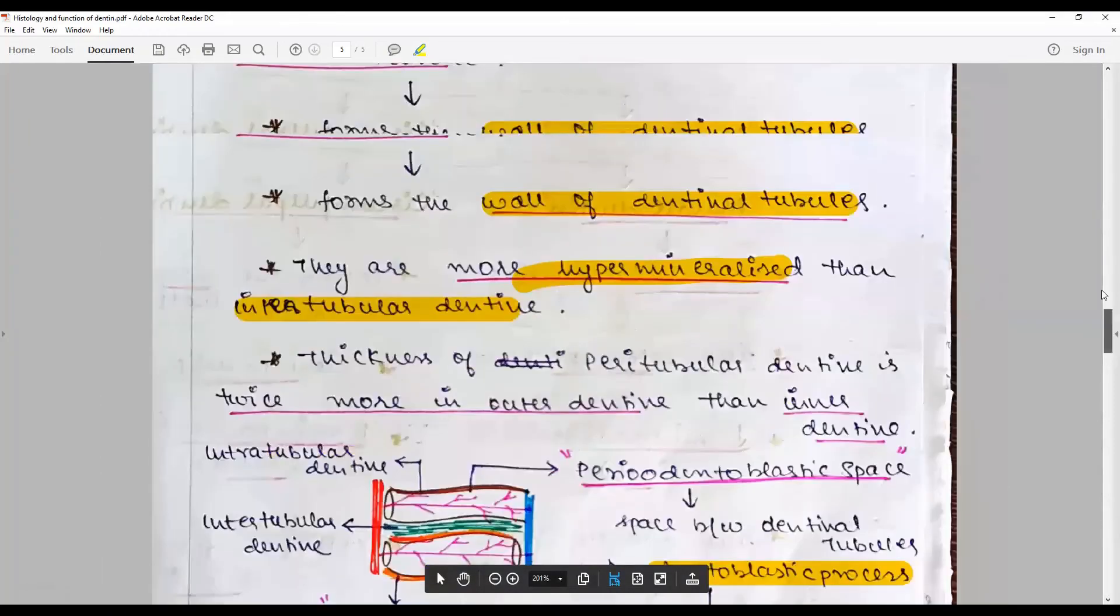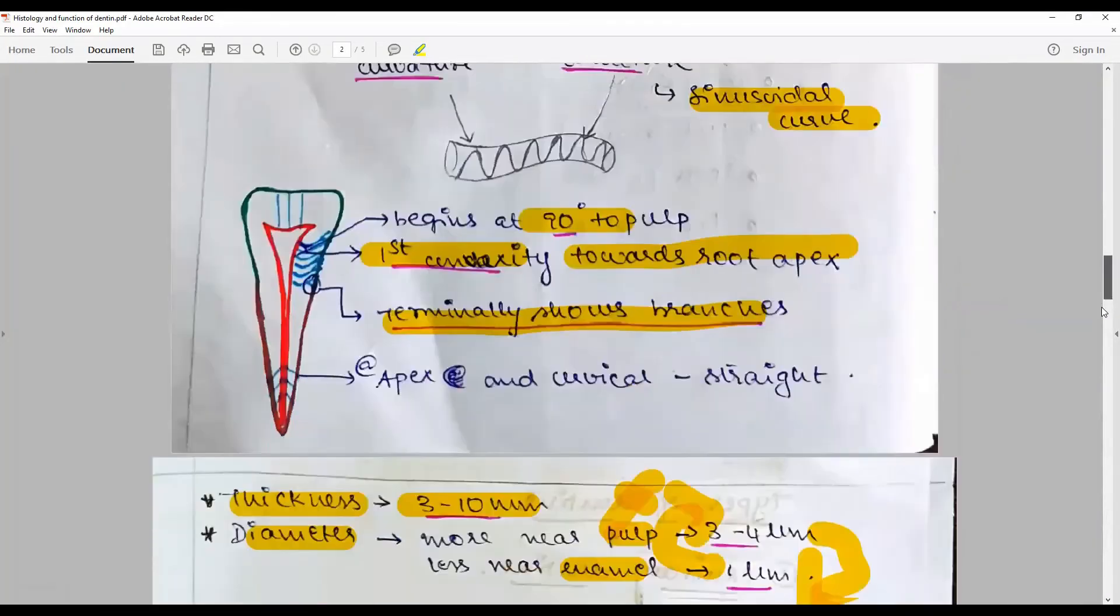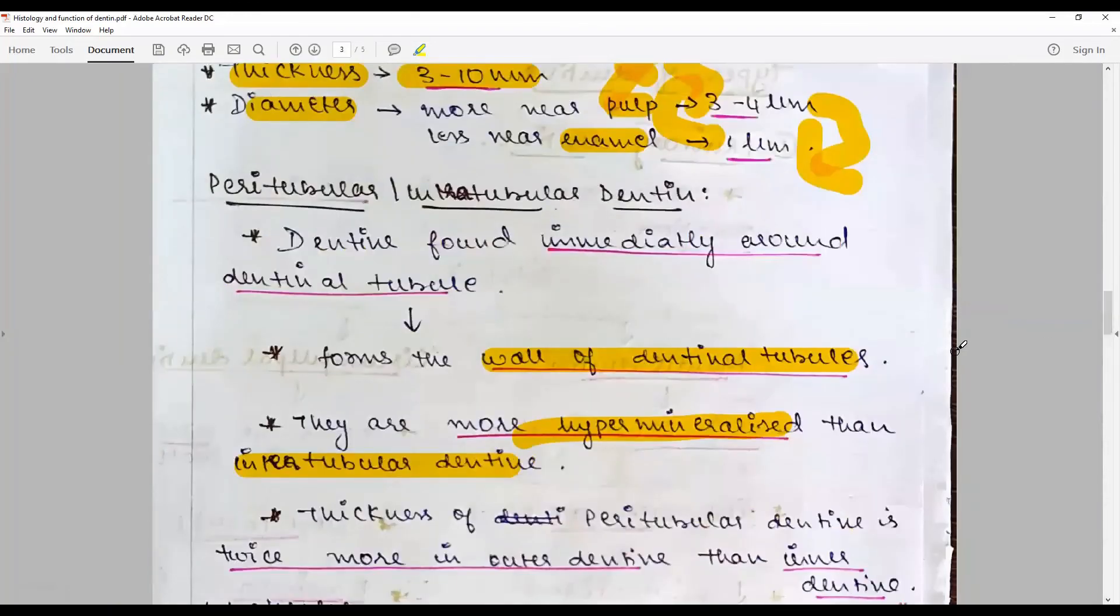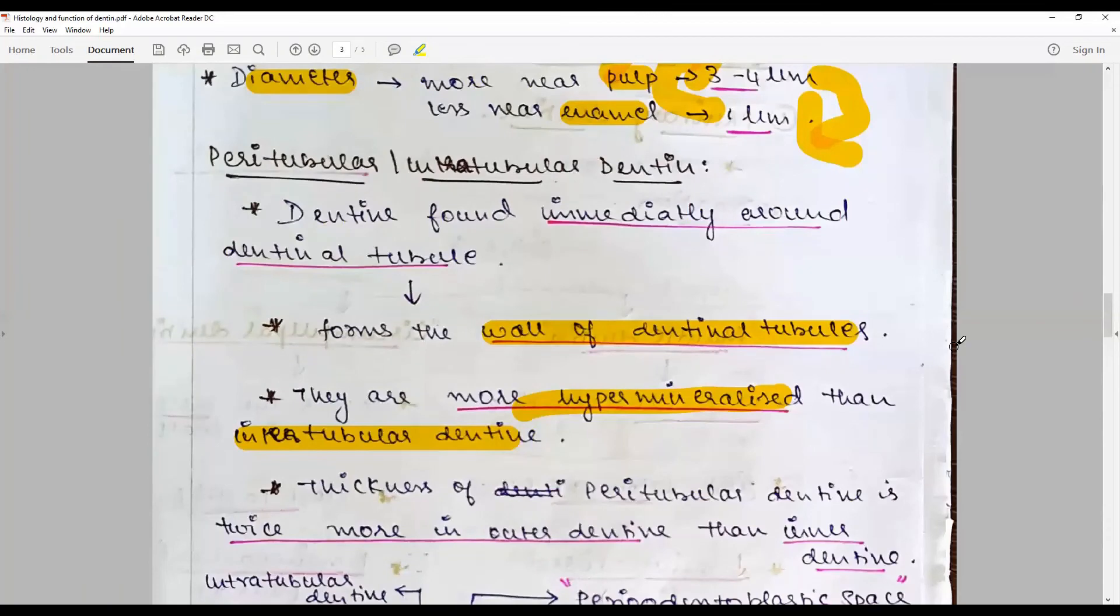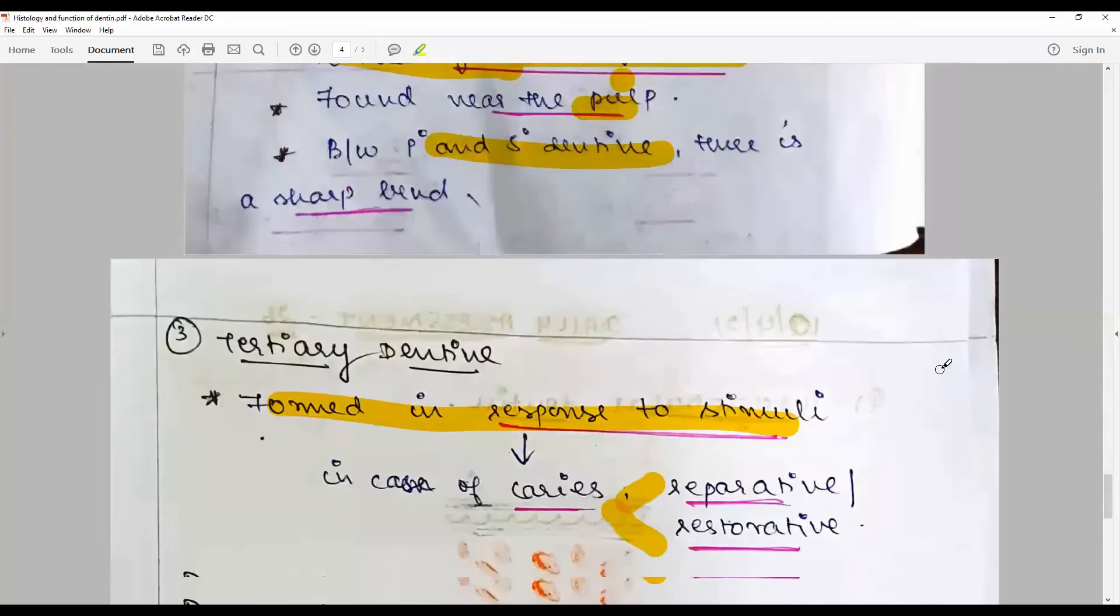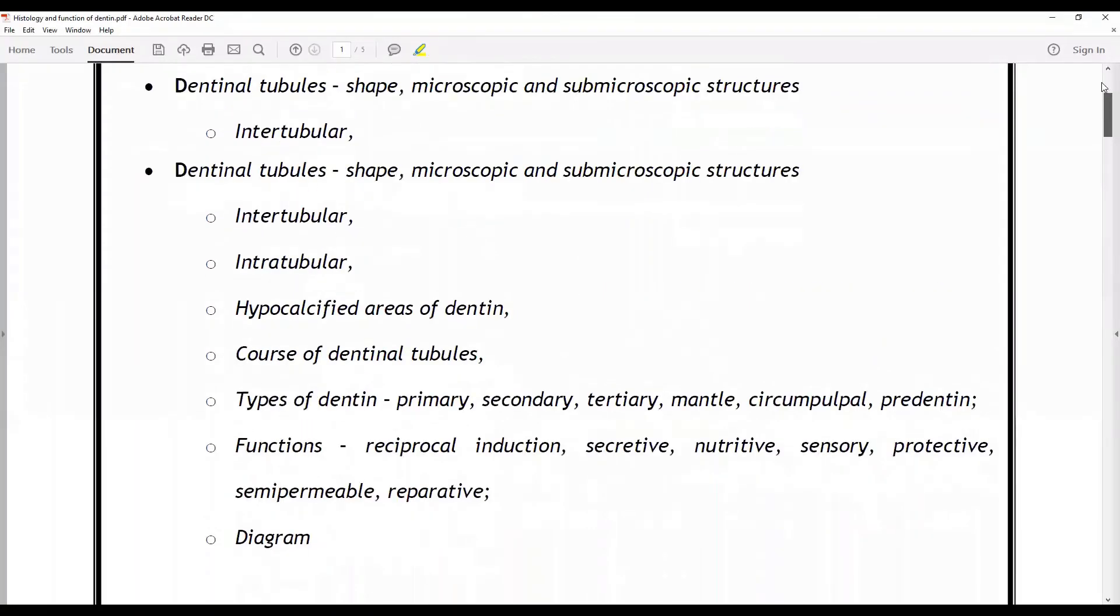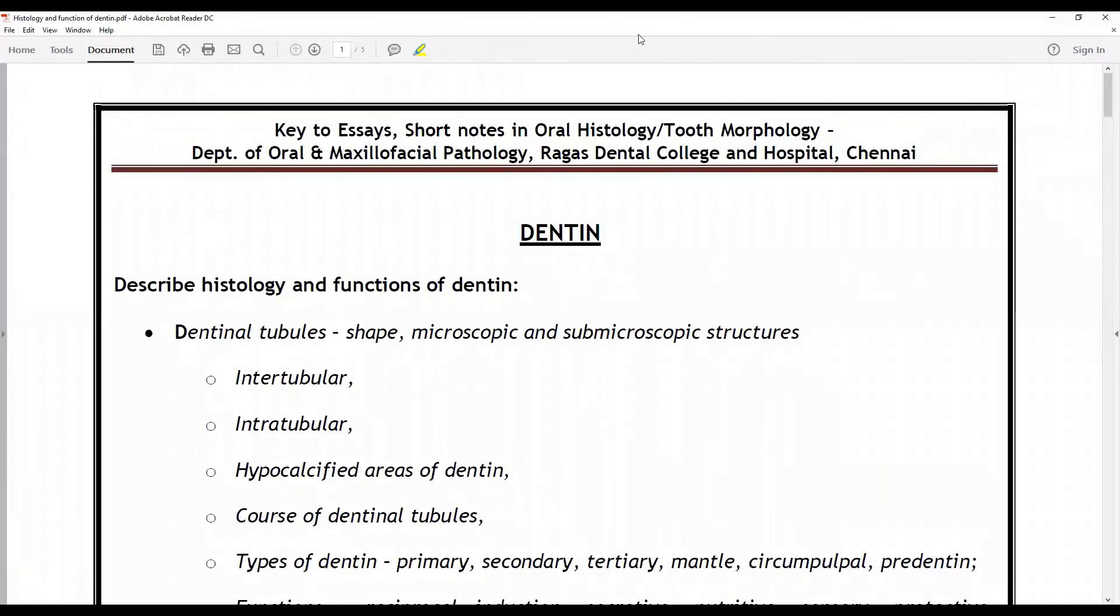That brings to an end the dentin histology and function. If you have time you can talk about interglobular dentin, enamel spindles that cross into the dentin, but time is very restricted. You have about 20 minutes to draw all the diagrams and explain, so it is better that you limit it. With that we come to an end of this question on histology and functions of dentin. Stay connected with this channel for another session on one question a day. Continue learning incrementally, at least daily, one question a day. Happy learning.